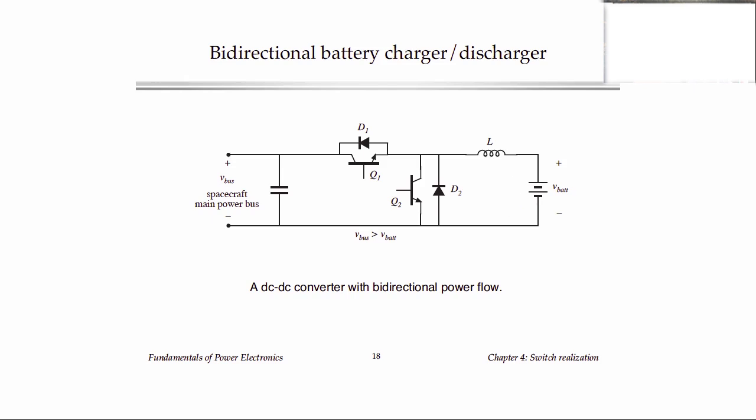So we can build current bidirectional switches basically as a parallel combination of a transistor and a diode. We call it an anti-parallel diode. This is basically taking two single quadrant switches and putting them in parallel so that they can conduct current in either direction.